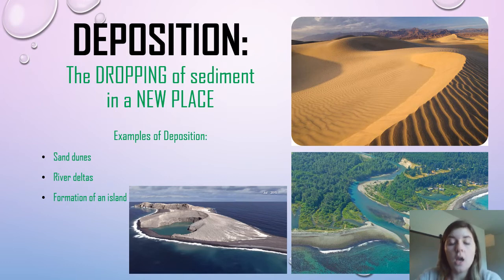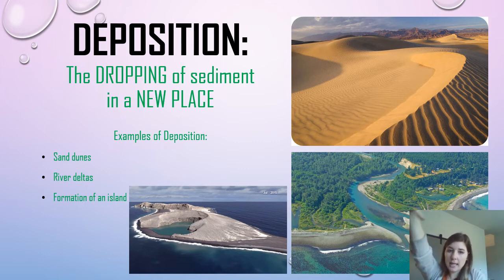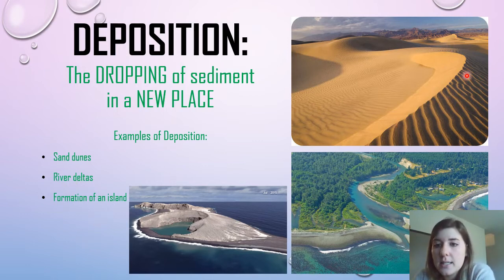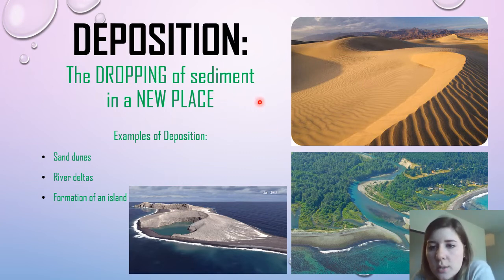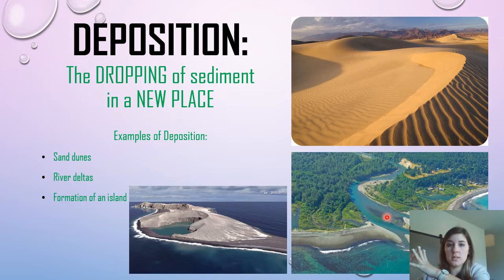Last, we have deposition — the dropping of sediment in a new place. Erosion and deposition go hand in hand: when sediment is moving, that's erosion; when it's dropped in a new place, that's deposition. Deposition can cause sand dunes, river deltas, and even islands to form. In this desert, you can see sand dunes — these sand hills form because sand is carried and then dropped in the same place over and over, building up into really cool sand dunes.